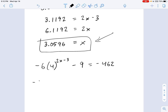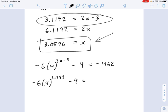And you can even try it out. You could try putting this thing in here and you can say, double check your work. Negative 6 times 4 to the - what was 2x minus 3? That was 3.1192 minus 9. And let's plug this into a calculator and see what we get. 4 to the 3.1192 minus 9. So what do I get? I get negative 461.9985. Pretty close, I think we did a good job. You can get even closer, of course, if you have more decimals. But really, rounding within two decimals is fine. We could have called this x equals 3.06, and it would have been just fine too.